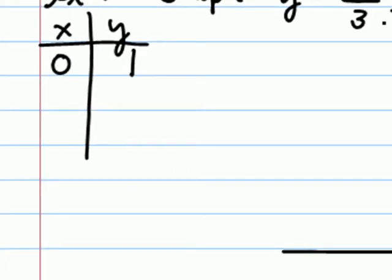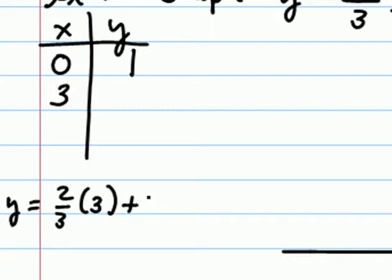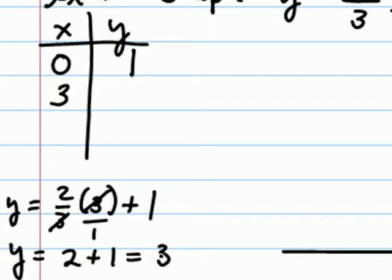Another good choice for x would be any multiple of three. For instance, three itself. And so, in a little scratch area, we could say y would be two-thirds times three plus one. Notice that two-thirds times three, the threes cancel, leaving us with two plus one, which is three.